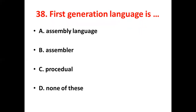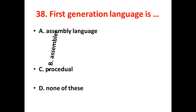First generation language is dash. Option A, Assembly language. Option B, Assembler. Option C, Procedural. Option D, None of these. The answer is Option B, Assembler.